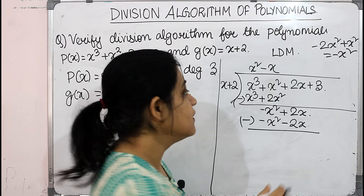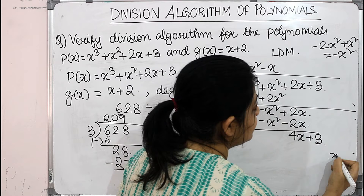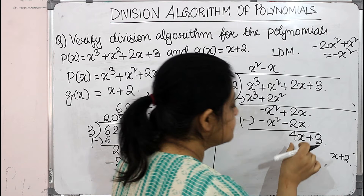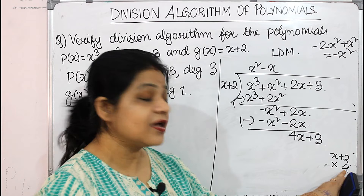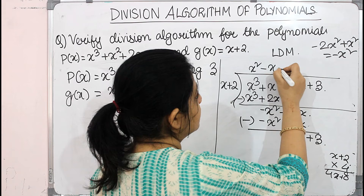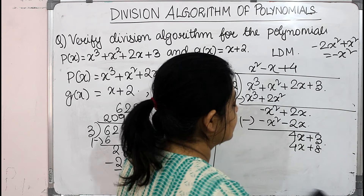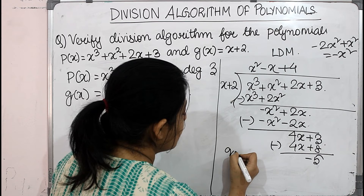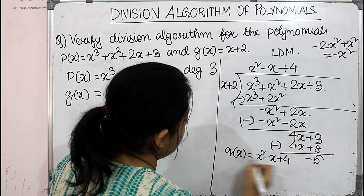Now to cancel 4x, we multiply x + 2 by 4, giving 4x + 8. Subtracting 4x + 3 − (4x + 8) gives remainder −5. So the quotient Q(x) = x² − x + 4 and the remainder R(x) = −5.